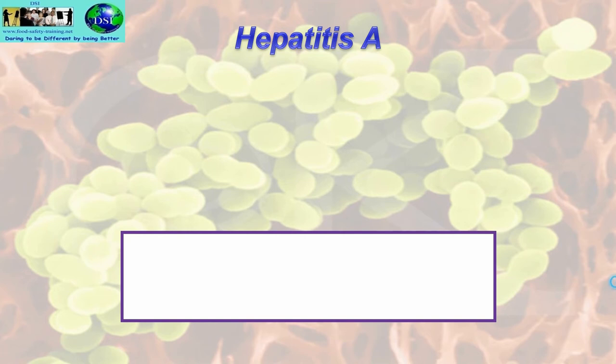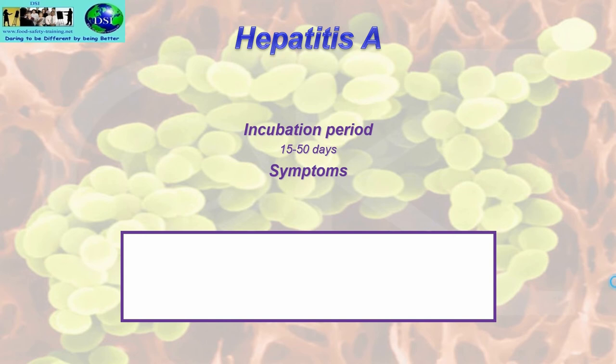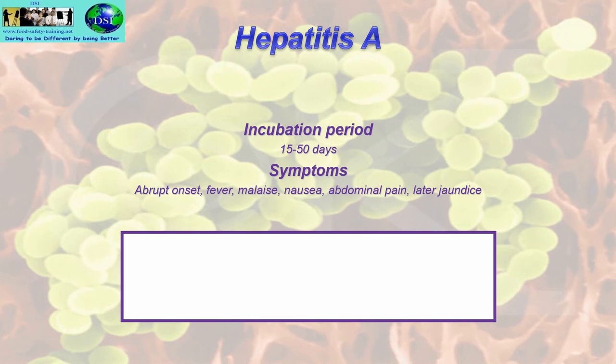Hepatitis A — there are about seven types of hepatitis, but type A is the one contracted mainly from food. The incubation period is 15 to 50 days. Symptoms include abrupt onset of fever, malaise, nausea and abdominal pain, and later jaundice — which indicates it affects the liver. Types B to G are contracted from blood contamination. Duration is from one week to several months, with a fatality rate of less than 1%.